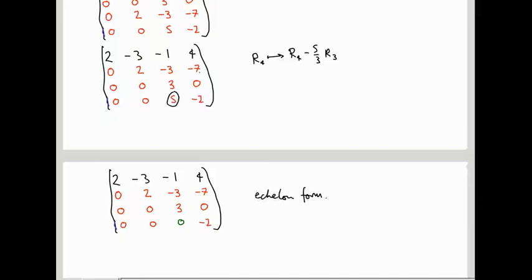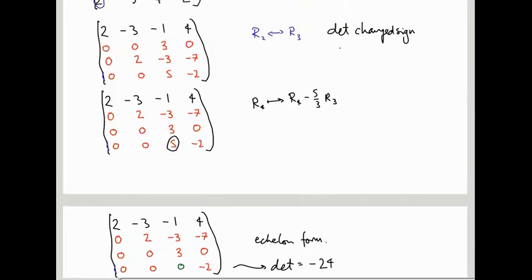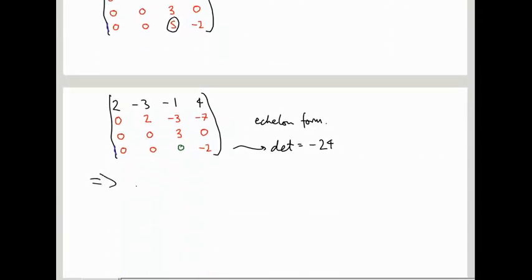So the determinant of this matrix is 2 times 2 times 3 times -2, just product for the diagonal entries so that's -24. So remember to get the determinant of B I need to change the sign, so that the determinant of B is 24.